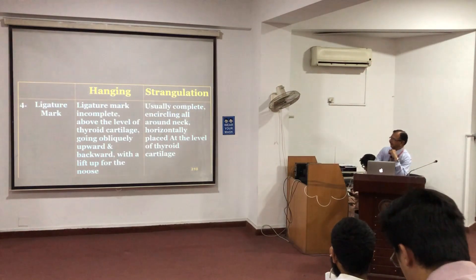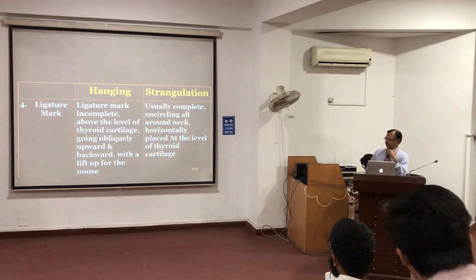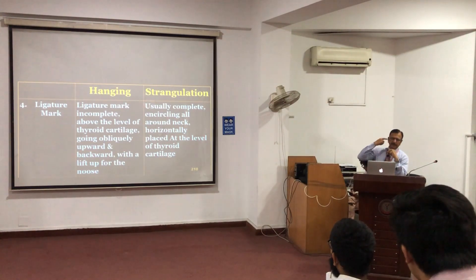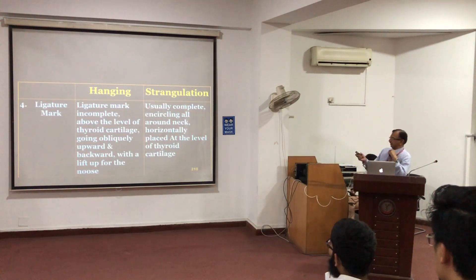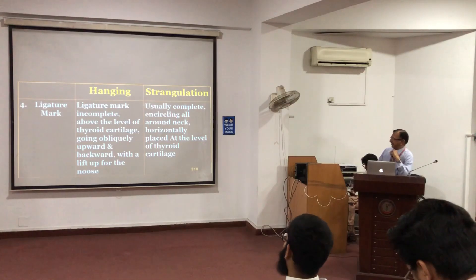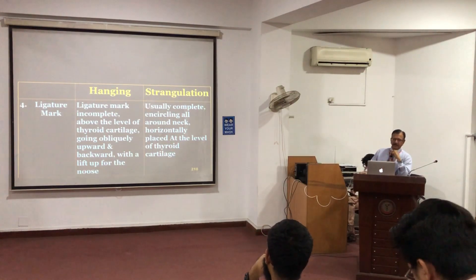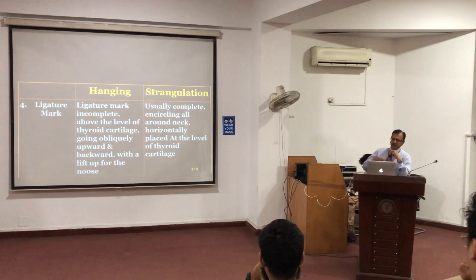About the ligature mark description: in hanging, the ligature mark is incomplete, usually above the thyroid cartilage, going upward and oblique, with a lift up at the nape of the neck showing the point of suspension, and there is a spared area. In strangulation, it is usually horizontally placed, completely encircling the neck, at the level of the thyroid cartilage.